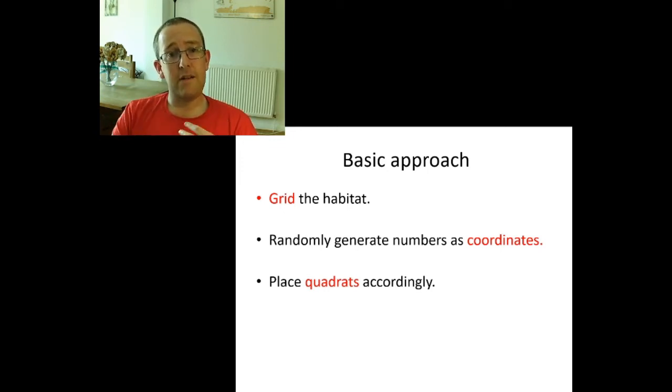So you've got to take the whole habitat, grid it out and randomly generate numbers as coordinates and place the quadrats accordingly. Machines are very, very good at being random. You are not. And I can illustrate this with three simple questions.